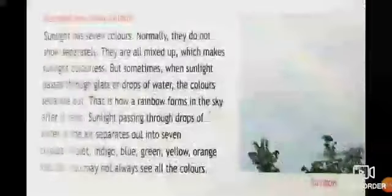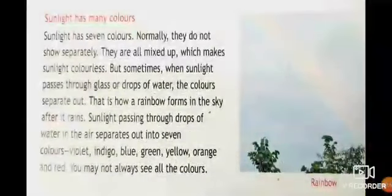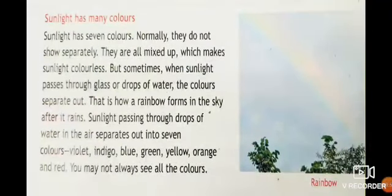Next we will see about sunlight has many colors. Sunlight has seven colors. Normally they do not show separately. They are all mixed up, which makes sunlight colorless.